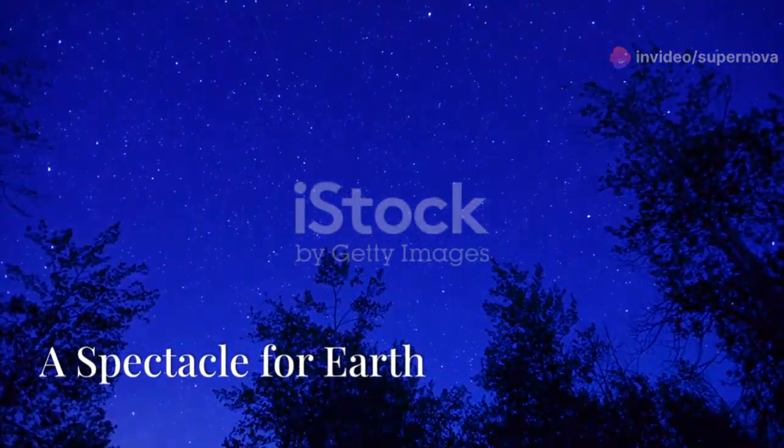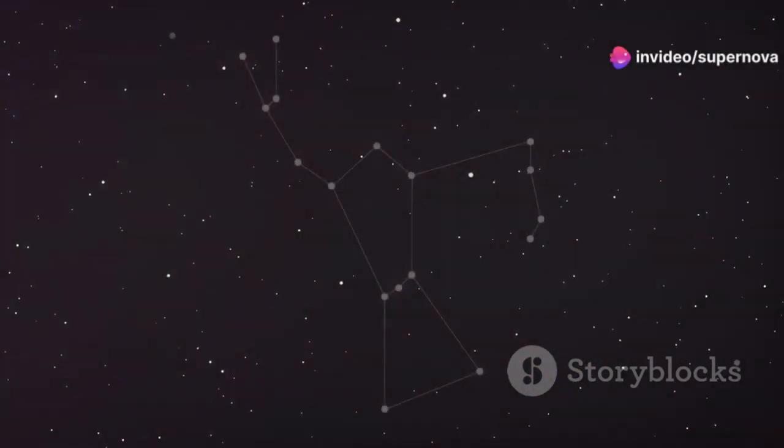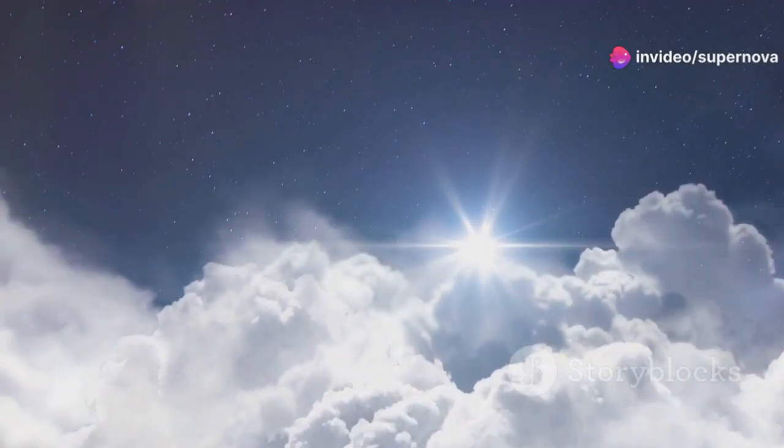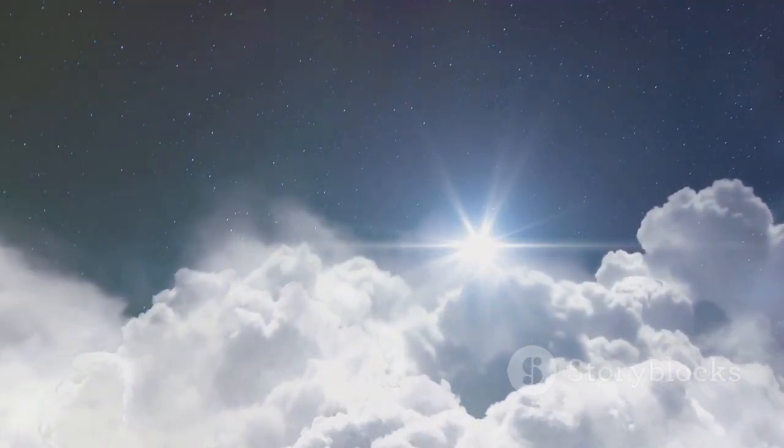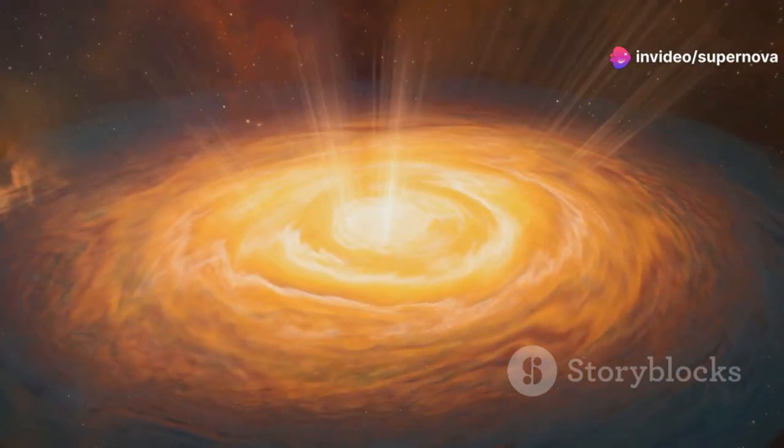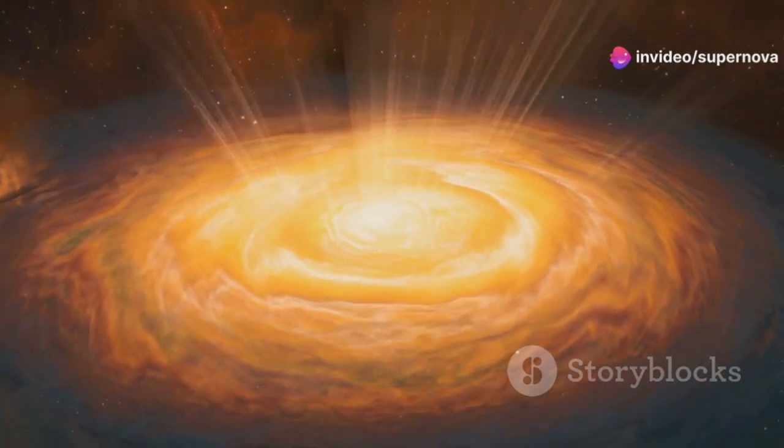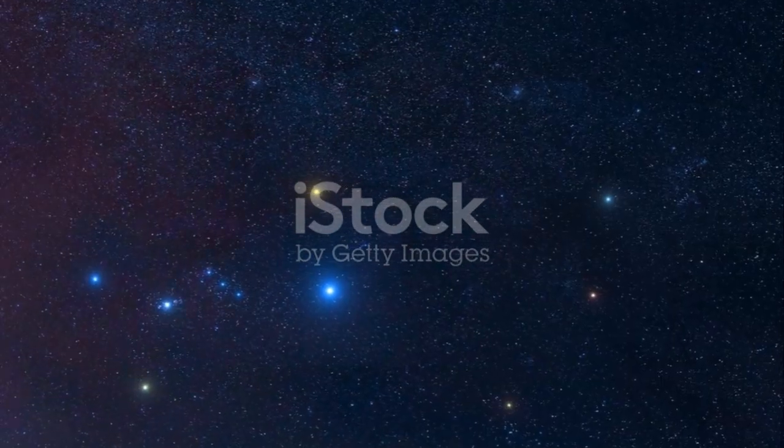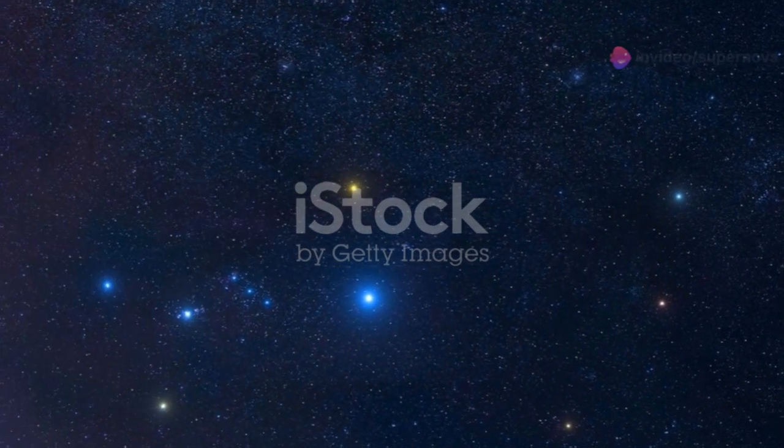Imagine gazing up at the night sky and witnessing a star exploding with the brilliance of a billion suns. That's what we can expect when Betelgeuse goes supernova. The explosion will be visible from Earth even during the day, casting shadows at night and potentially even outshining the moon. This celestial display will last for weeks or even months, gradually fading as the supernova remnant expands into space. The explosion will release an immense amount of energy, equivalent to the total energy output of our sun over its entire lifetime. Fortunately, Betelgeuse is far enough away that this explosion poses no threat to Earth.